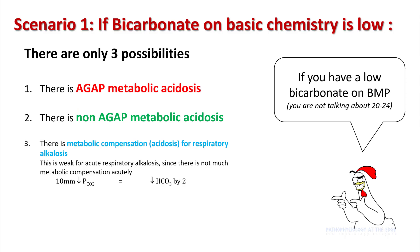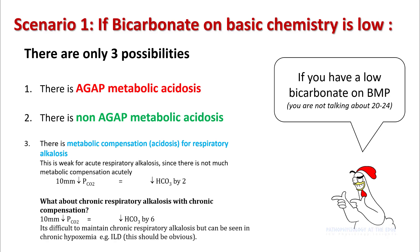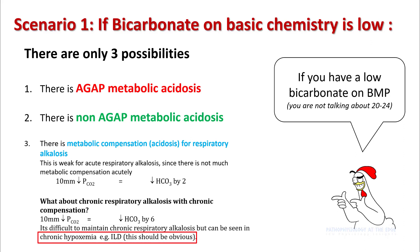The compensation for acute respiratory alkalosis is pretty weak, as your bicarb only falls by two for every ten fall in PaCO2. For chronic respiratory alkalosis, the effect is a little stronger. However, this is usually seen in patients with chronic hypoxemia, like patients with interstitial lung disease, so this should be obvious. You should be able to rule out the third differential by evaluating the respiratory system and figuring out if the patient has chronic hypoxemia.